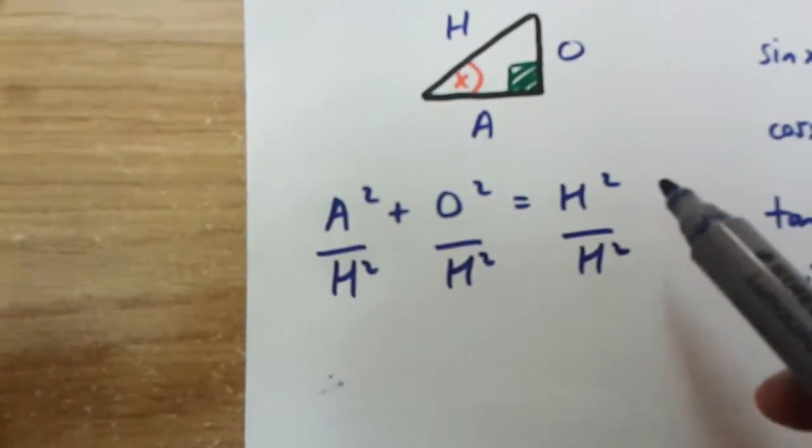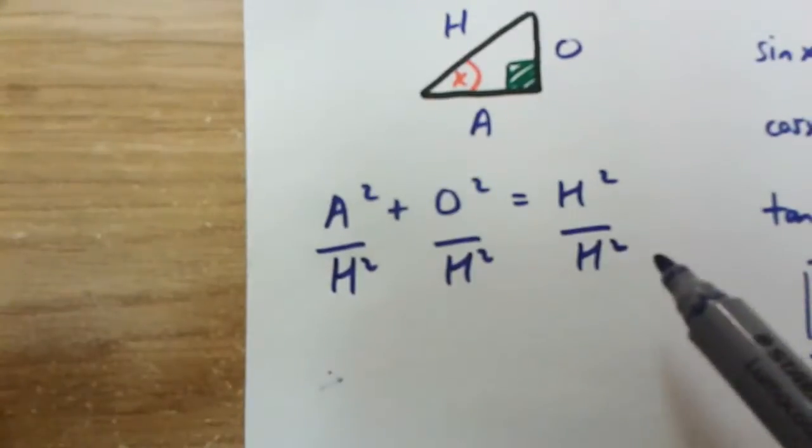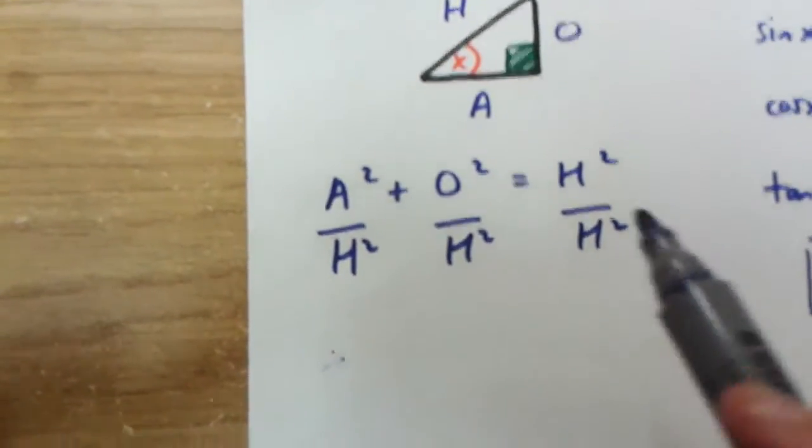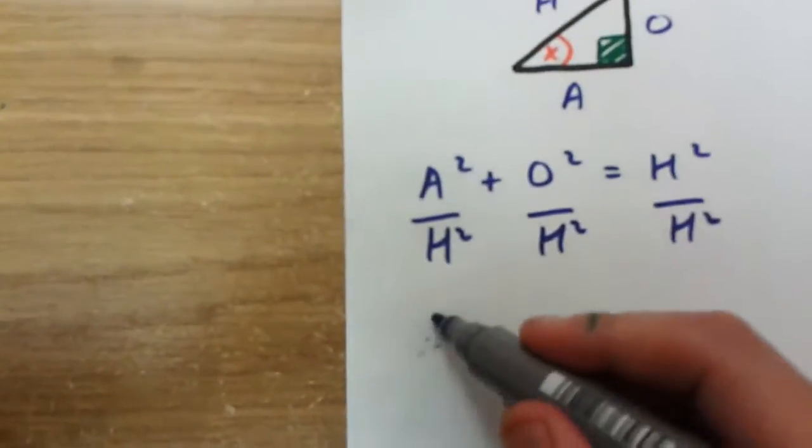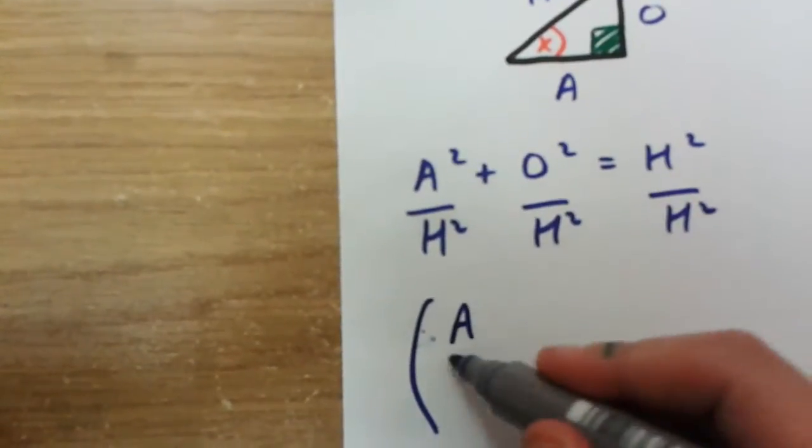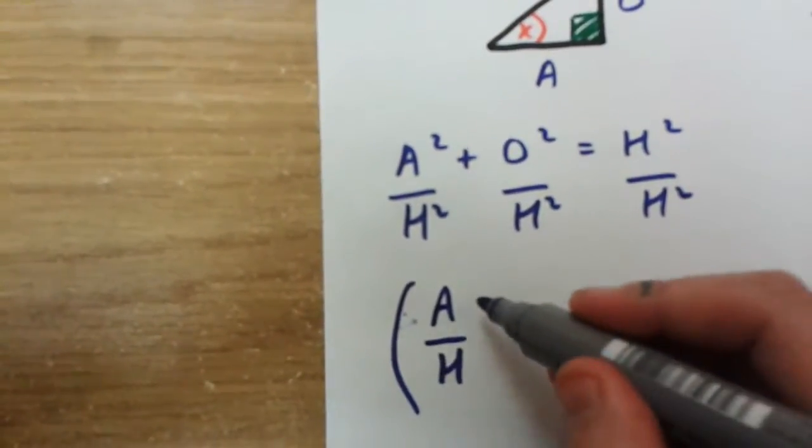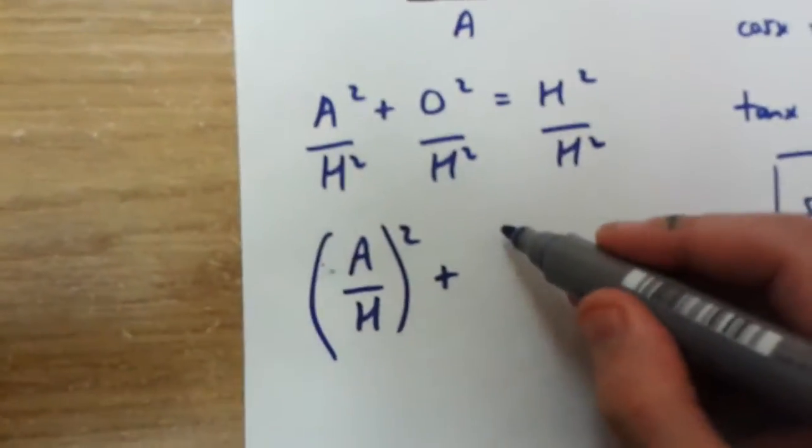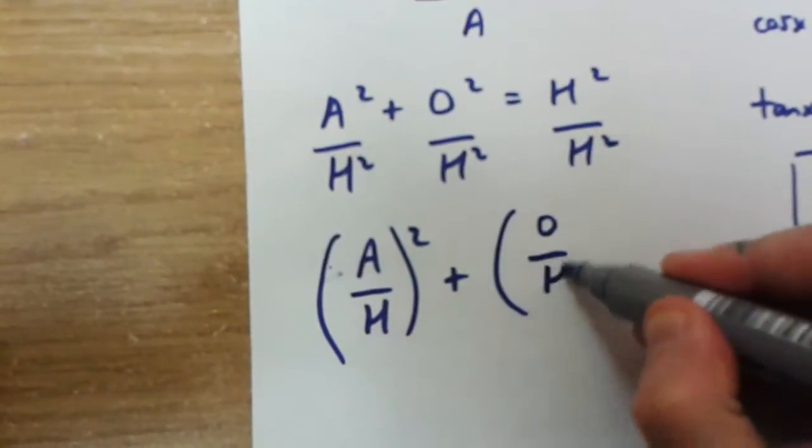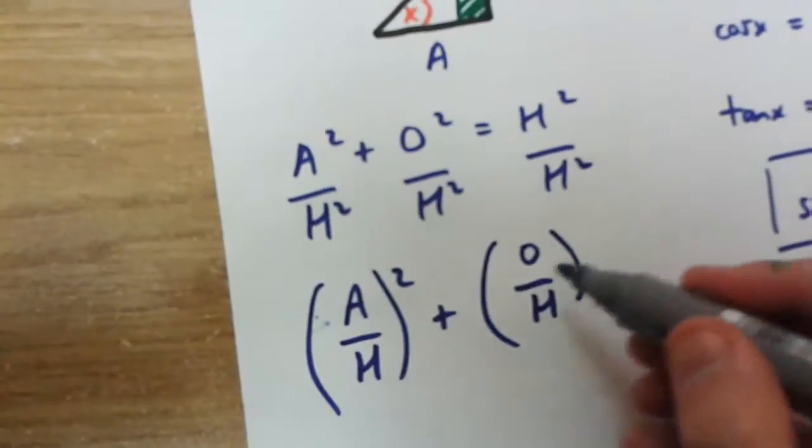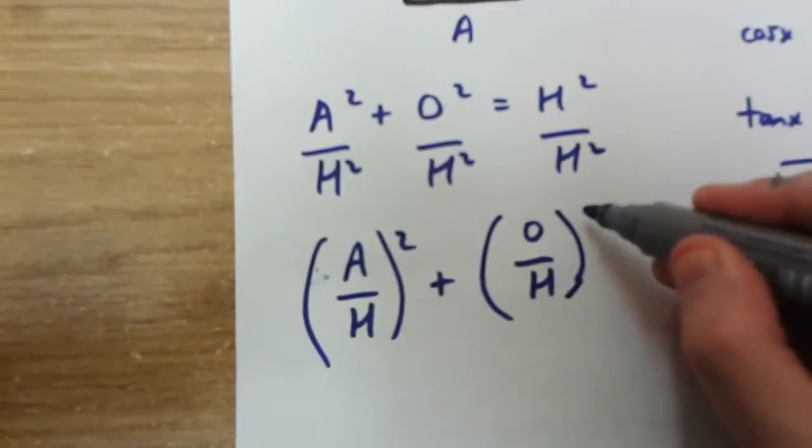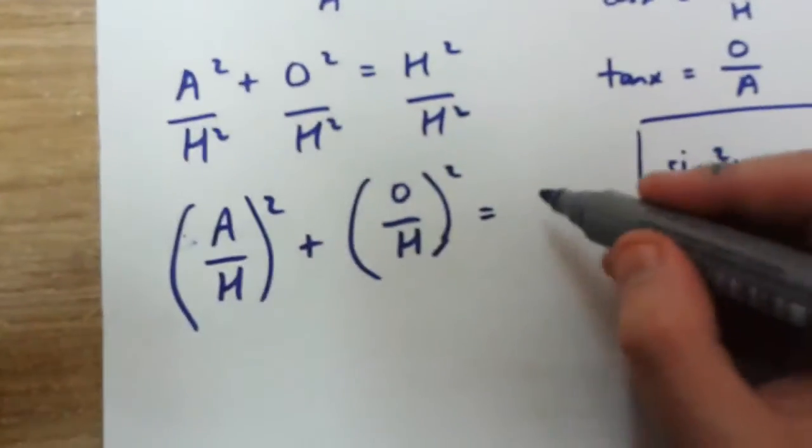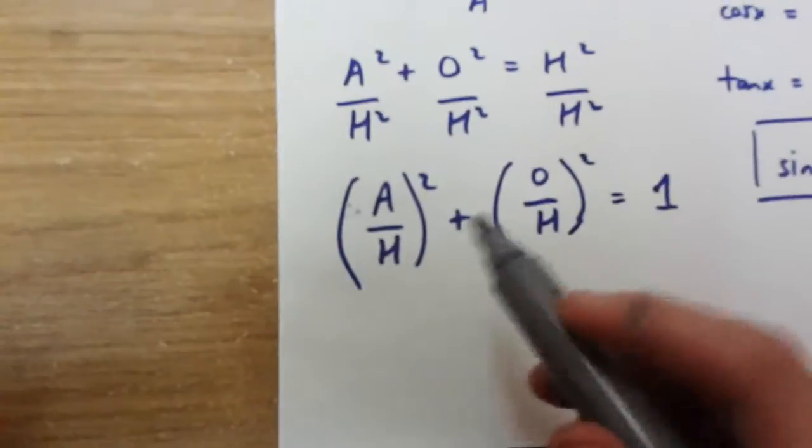But h squared over h squared is actually equal to 1. And check this out: what we get is adjacent over hypotenuse squared plus opposite over hypotenuse squared is equal to 1.